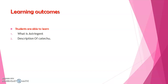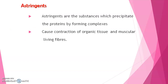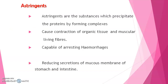After this session, students will be able to learn what is an astringent and the descriptions of both types of catechu. Astringents are substances which precipitate proteins by forming complexes and cause the contraction of organic tissue and muscular living fibers.